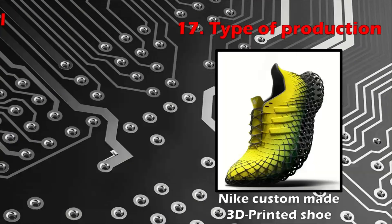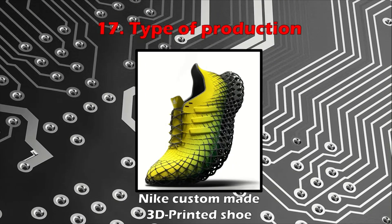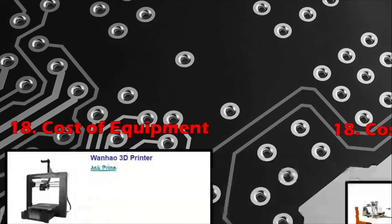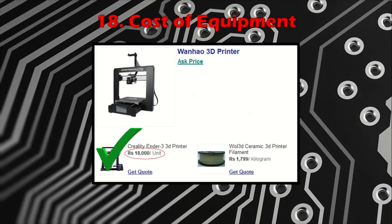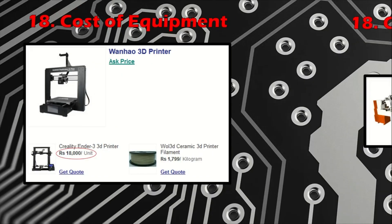Number seventeen: type of production. For production of custom-made designs, additive manufacturing is the best, and subtractive manufacturing is suitable for medium to large-scale production. Number eighteen: equipment cost. The cost of a desktop version of a fused deposition modeling 3D printer is less than that of a CNC machine, but other additive manufacturing machines are costly.